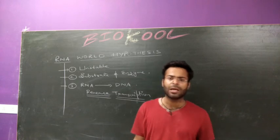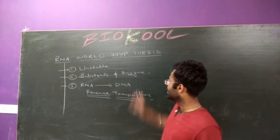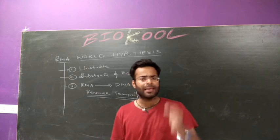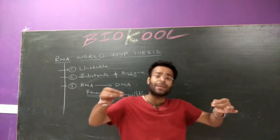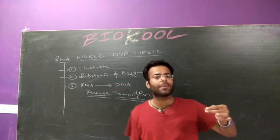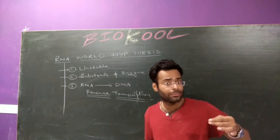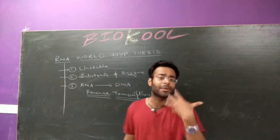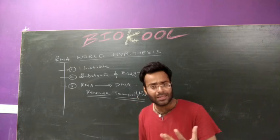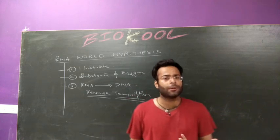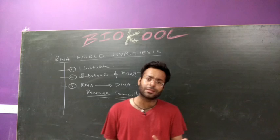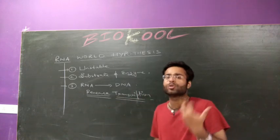Point number two: RNA can act as substrate and enzyme. RNA is a chemical molecule which itself can work as the substrate and as the enzyme. We need quick reactions, and RNA would have provided those reactions. Hence, RNA is a better genetic material for initiation of life.